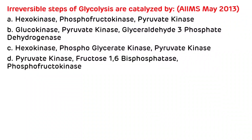That was all about glycolysis. Now we will see multiple choice questions. This question was asked in AIIMS May 2013: 'The 3 irreversible steps of glycolysis are catalyzed by?' Options: A. Hexokinase, phosphofructokinase, and pyruvate kinase. B. Glucokinase, pyruvate kinase, and glyceraldehyde-3-phosphate dehydrogenase. C. Hexokinase, phosphoglycerate kinase, and pyruvate kinase. D. Pyruvate kinase, fructose-1,6-bisphosphatase, and phosphofructokinase. As we have already seen, the 3 irreversible steps are catalyzed by hexokinase/glucokinase, phosphofructokinase, and pyruvate kinase. The correct answer is A.